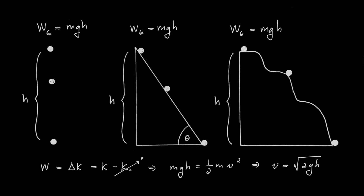This makes gravity special among forces. The force of friction would not behave this way — friction work would differ in all three cases. But the work done by gravity is the same in each case. For reasons that will become apparent later, we refer to gravity as a conservative force. Gravity is special because the work it does is independent of path; all that matters is the height an object travels, and the work done by gravity equals mgh.